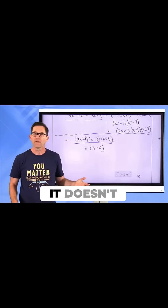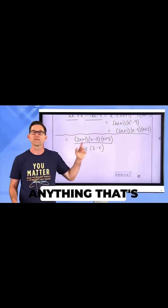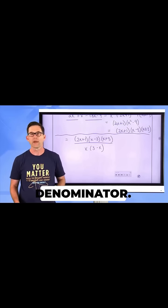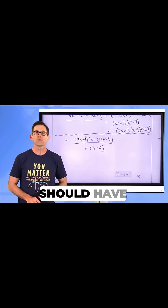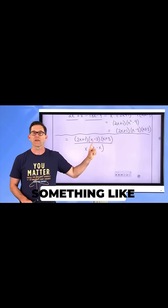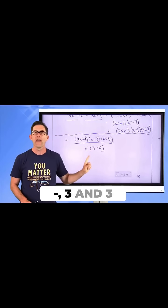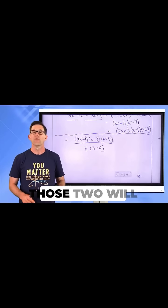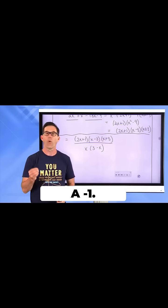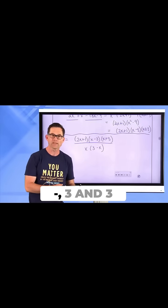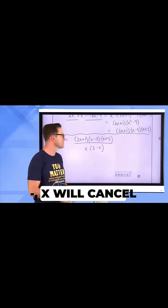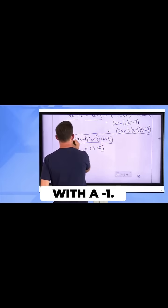And when you look at it, it doesn't appear that there's anything that's identical in the numerator and the denominator. But one of the things we should have learned is that when we have something like this, x minus three and three minus x, those two will cancel, but they'll leave you with a negative one. So x minus three and three minus x will cancel and leave you with a negative one.